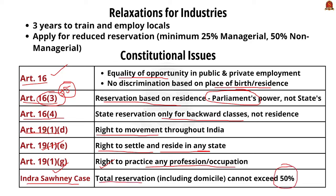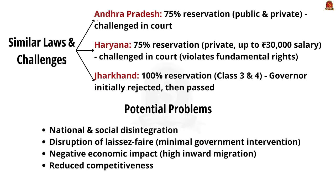According to the Indra Sawhney case, total reservation should not exceed 50% of available posts, including domicile reservation. This is not the first such attempt — Andhra Pradesh tried 75% reservation for locals in all jobs, and this law was challenged in court. Haryana also introduced 75% reservation in the private sector; the Punjab and Haryana High Court ruled it violated fundamental rights, calling it an 'artificial wall.' The matter is currently before the Supreme Court.